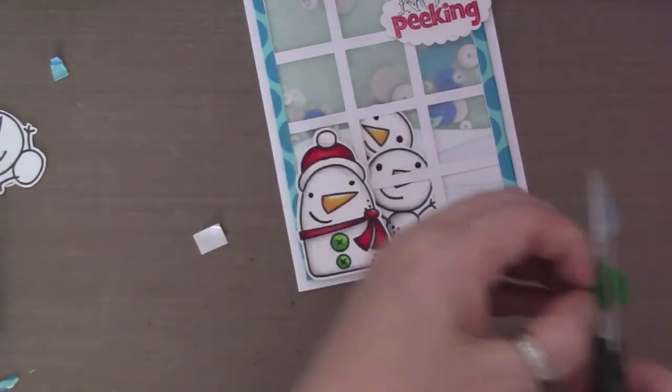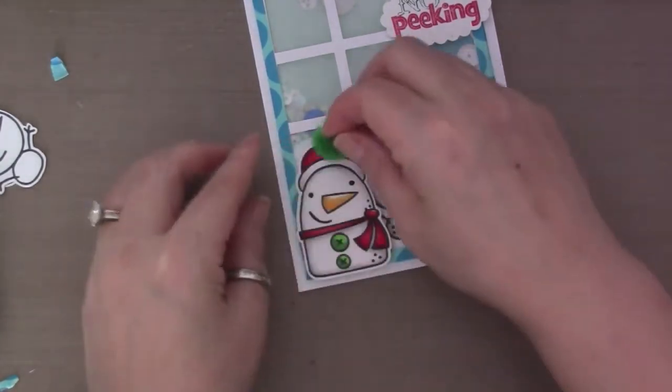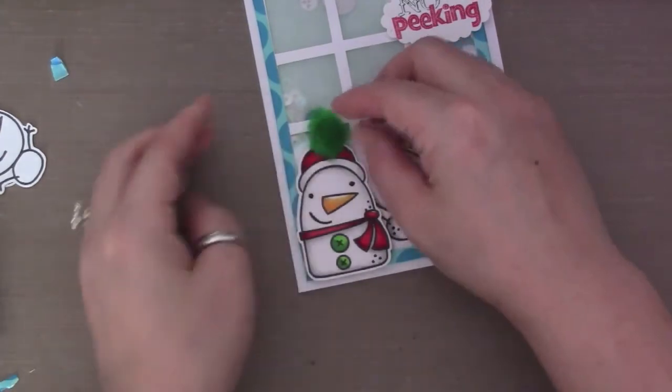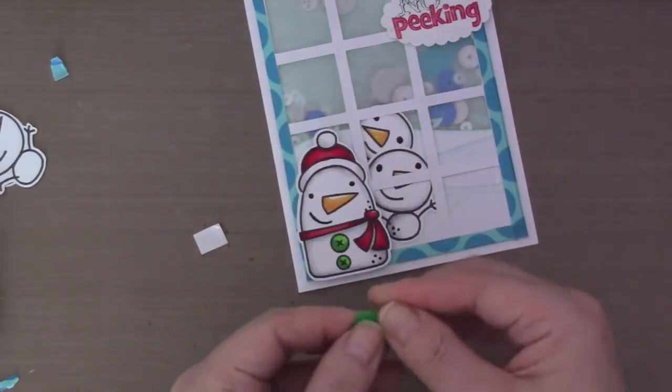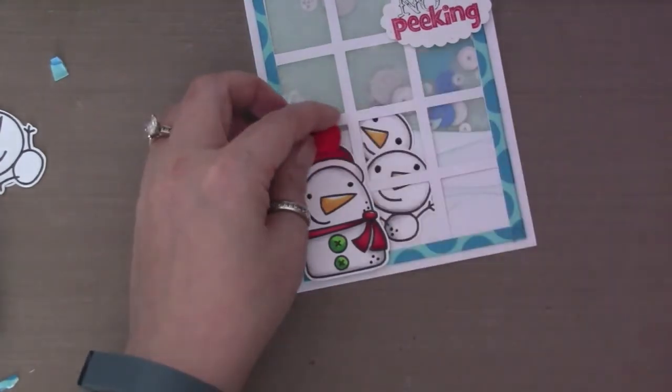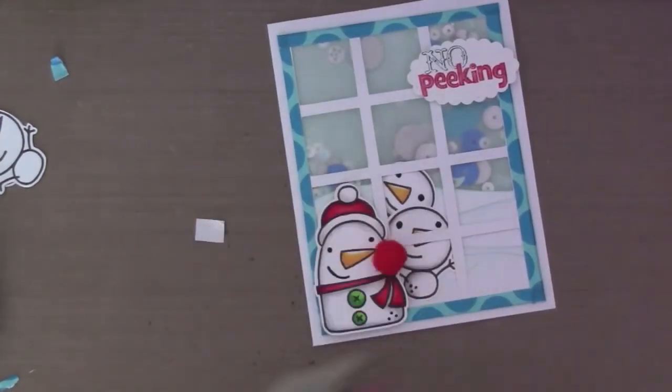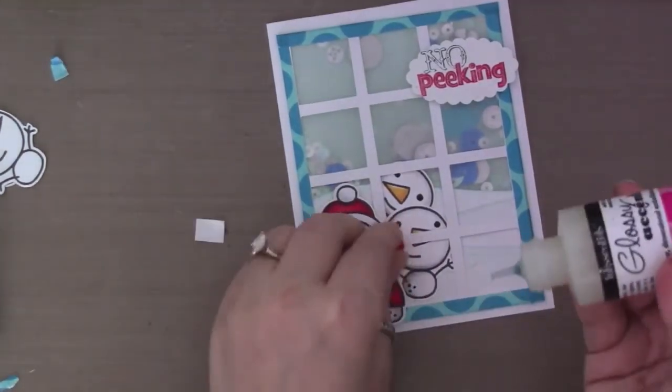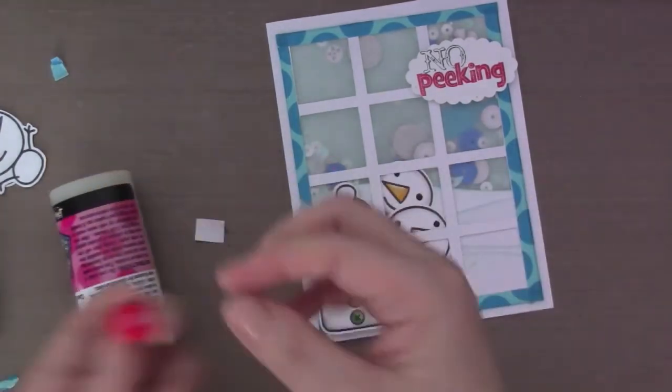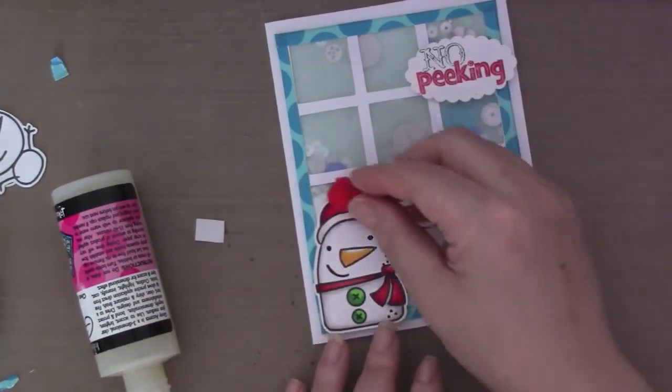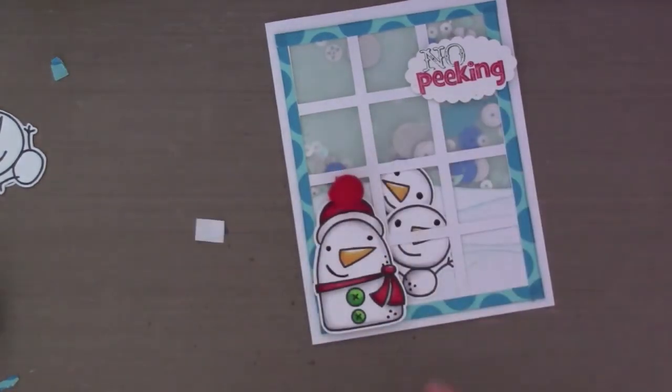And then here I decided I want a pom pom on the top of his hat, but it was like way too big, so I cut it in half. But it all fell apart. So here I'm just putting some glossy accents, and then I'm going to put that big pom pom on his top of his hat. It's a little extreme, but I wanted something there. It looks funny, but this is my card for today.